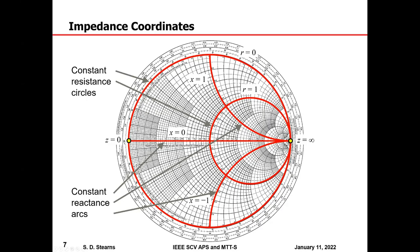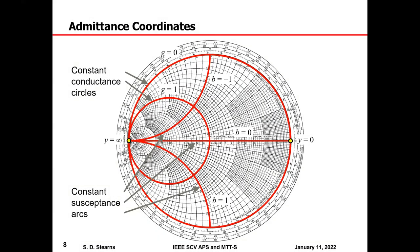Everyone is familiar with the constant resistance circles and constant reactance arcs on the Smith chart. The zero impedance point is on the far left and the infinite impedance point is on the far right — rotated from Philip Smith's original configuration. Rotating the coordinates by 180 degrees gives admittance coordinates, with constant conductance circles and constant susceptance arcs, where infinite admittance is on the left and zero admittance is on the right. The Smith chart is used mainly today for display of data, allowing you to see things not visible in rectangular Cartesian plots.